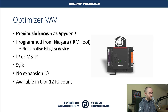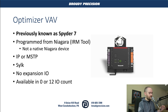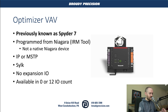Next up is the Optimizer VAV, previously known as the Spyder 7. It is also programmed from within Niagara using the IRM tool — again, not a native Niagara device, but programmed from within Niagara. These are available as BACnet IP or MSTP devices. They do have Silk, no expansion IO possibilities, and they come in a 0 IO count or a 12 IO count.